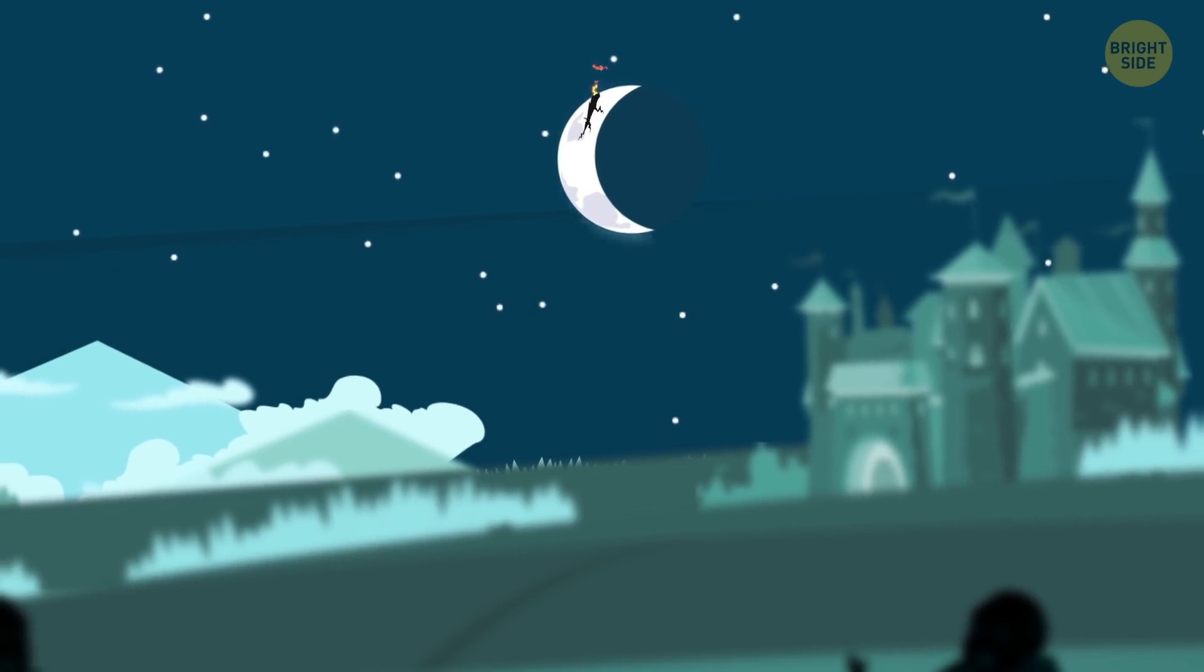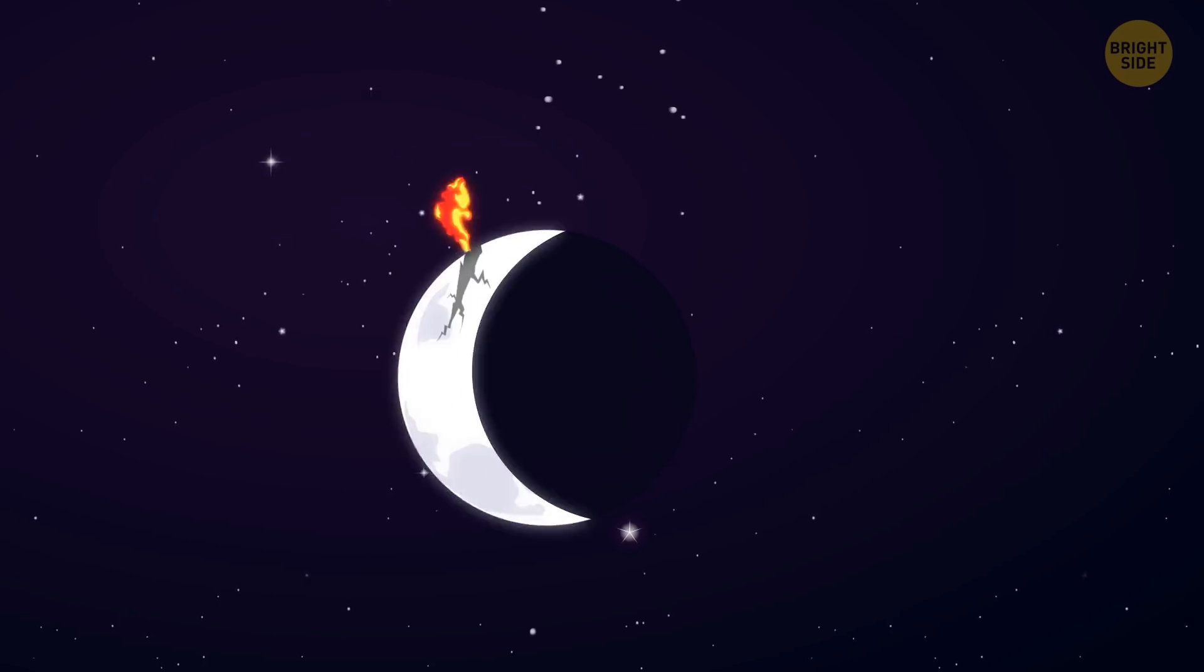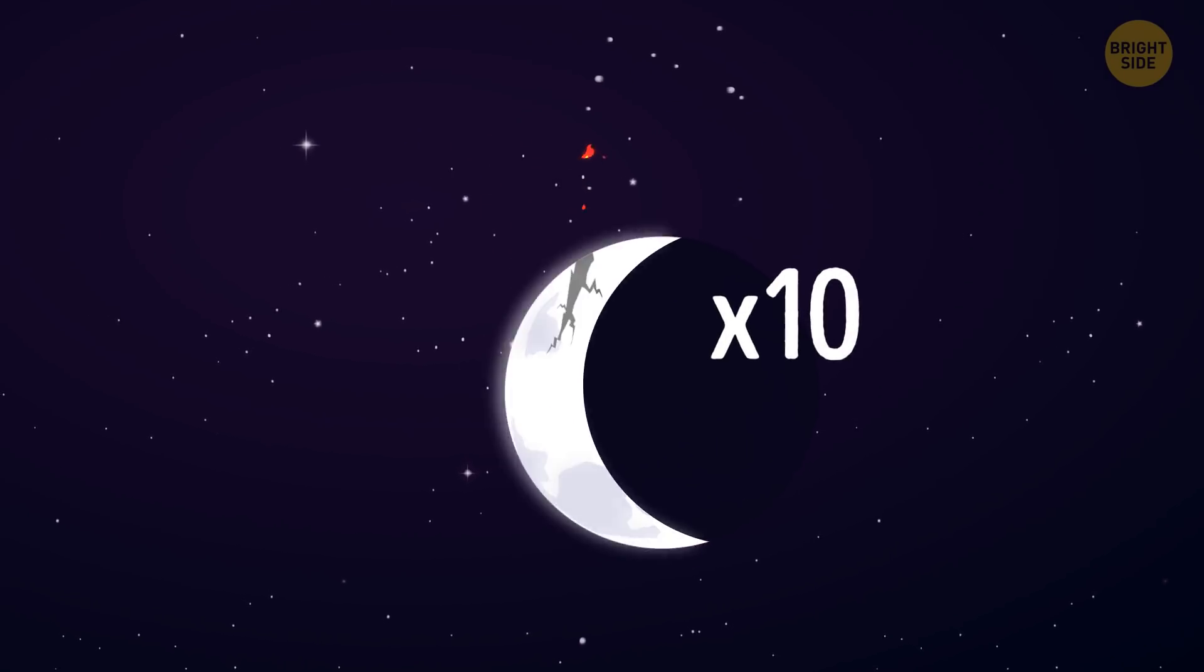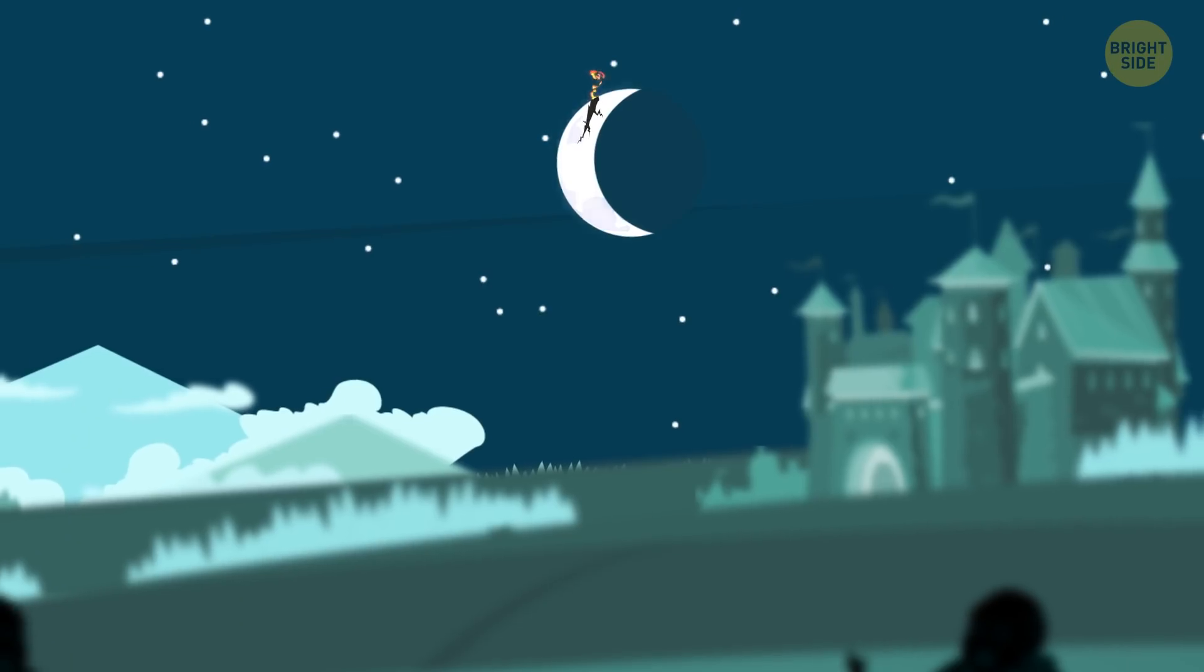In the next moment, the Moon began to pulsate and then return to its calm state. This phenomenon was repeated more than 10 times. And the flames took different shapes each time. When this nightmare was over, the Moon turned black.